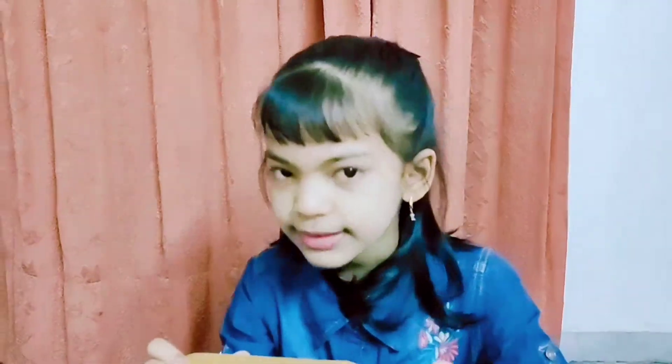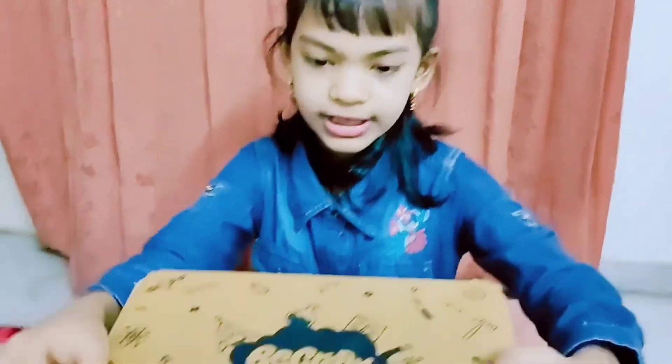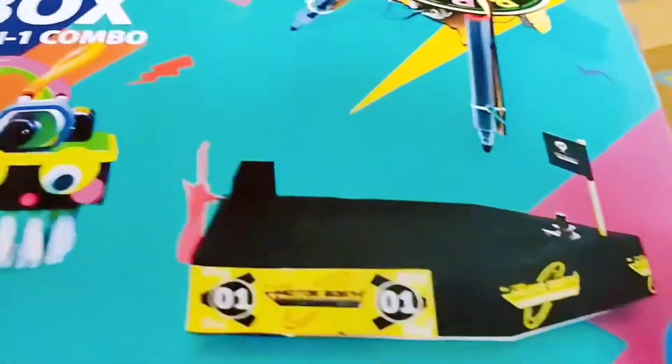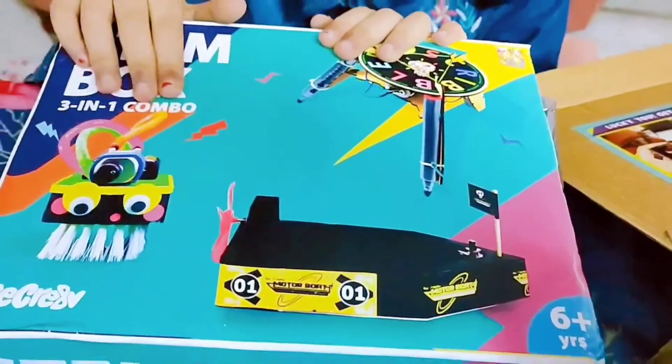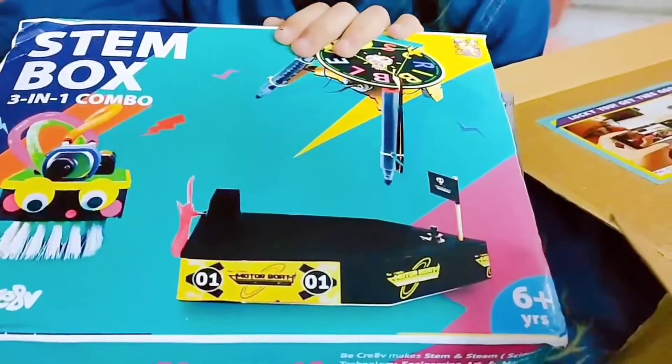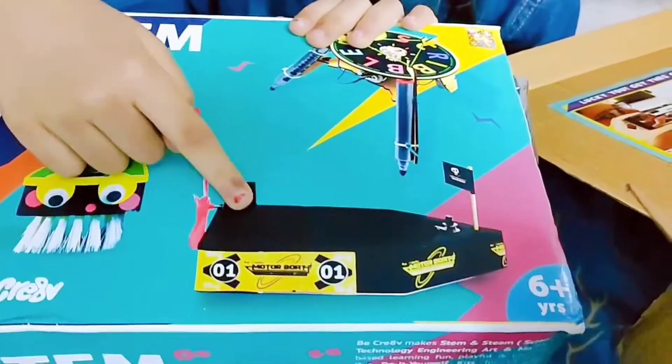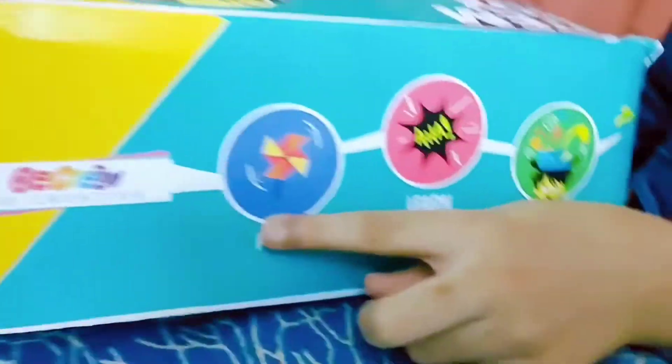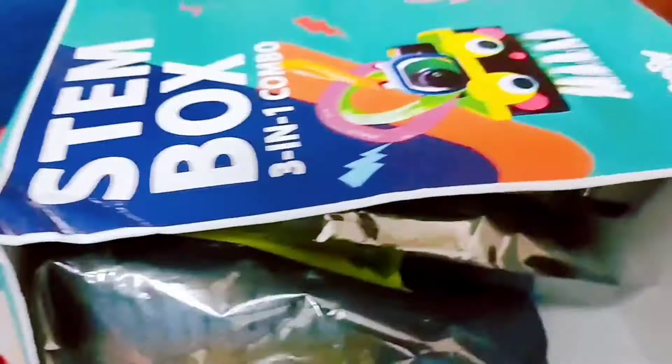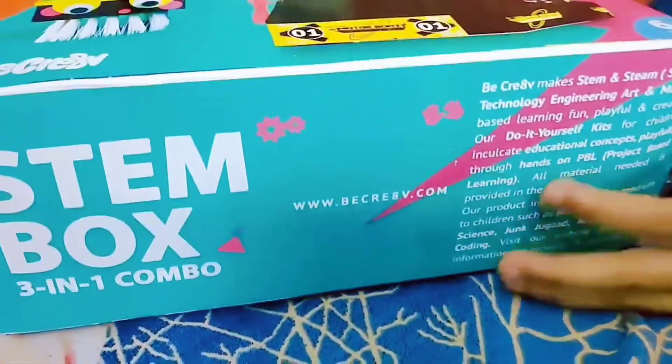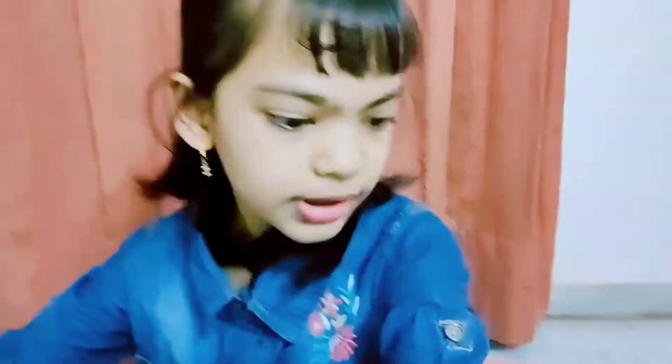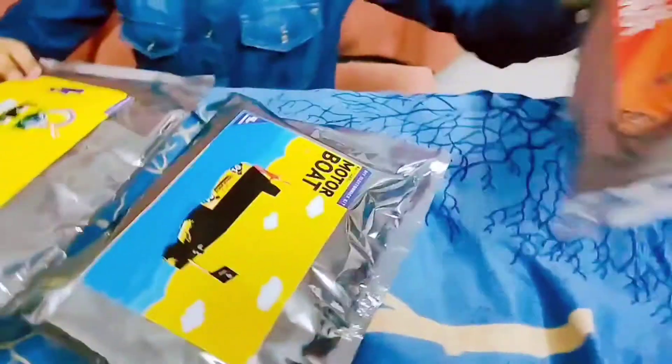Now let me open it and show you what's inside. So here we go, dive into the science. First we have the STEM Box three-in-one combo. In this pack we have the mini brush, the motorboat, and the robotic scribbler. On the side it's written play, learn, and grow.